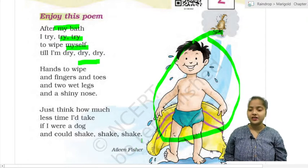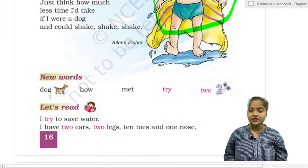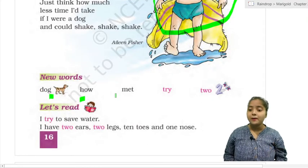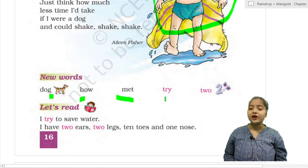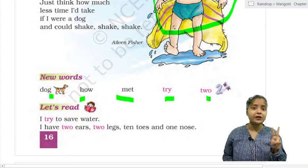Who has given this poem? Aileen Fisher. So what are the new words here? Dog means dog. Wet. Try, try, try. Two, counting one, two.